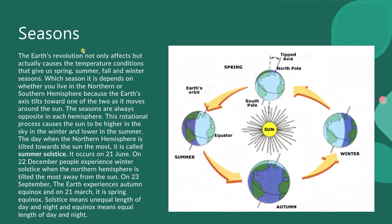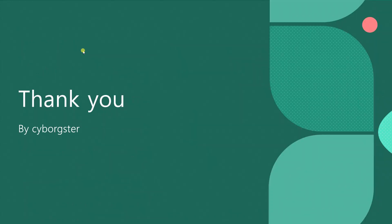The day when the northern hemisphere is tilted towards the sun the most is called summer solstice. It occurs on 21st June. On 22nd December, people experience winter solstice when the northern hemisphere is tilted the most away from the sun. On 23rd September, the earth experiences autumn equinox and on 21st March, it is spring equinox. Solstice means unequal length of day and night and equinox means equal length of day and night.